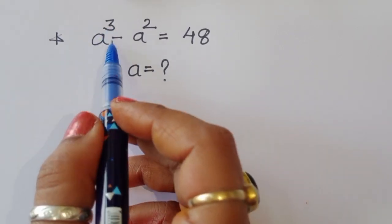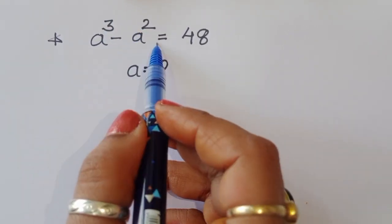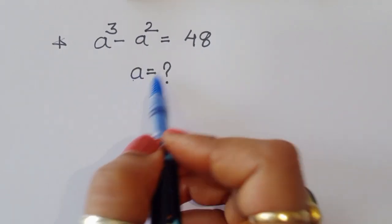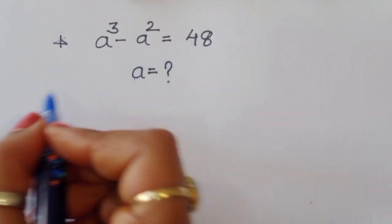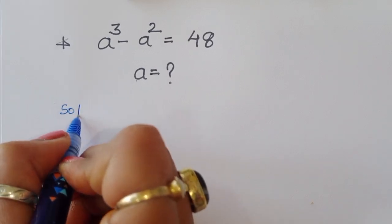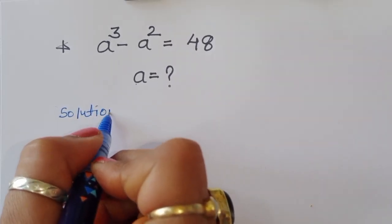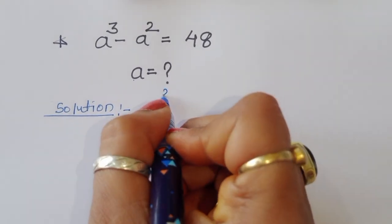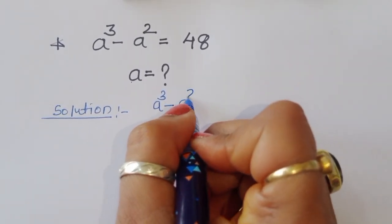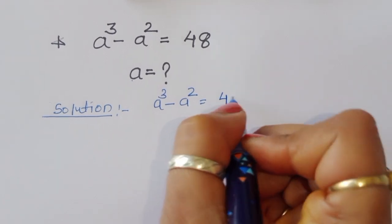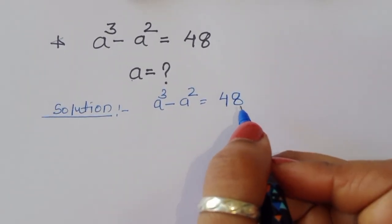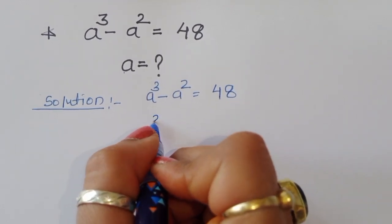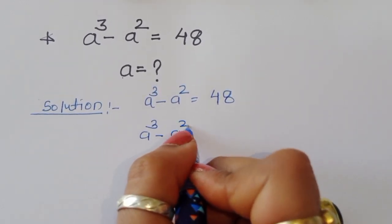The question is: given a³ - a² = 48, find the value of a. Let's see the solution. We have a³ - a² = 48.